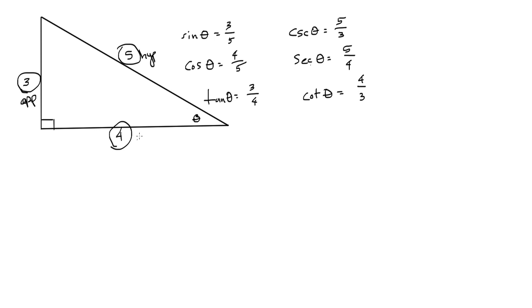Cosine being the adjacent, the length of the adjacent side over the hypotenuse, and secant being the reciprocal of that, hypotenuse over adjacent.